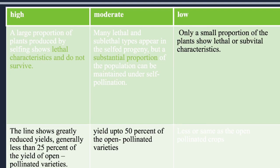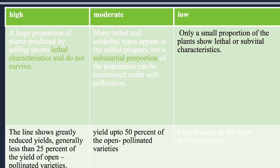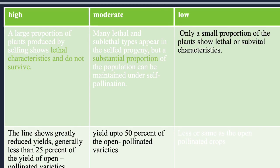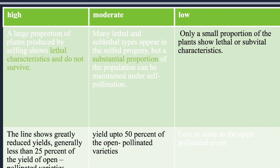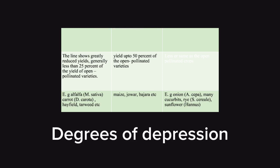The degree of inbreeding depression also determines the yield capacity of the plant. When the degree is very high, the percentage of yield is less than 25%. In moderate inbreeding depression, the yield is less than 50%. In low inbreeding depression, there is almost no variation — it is similar to open-pollinated varieties. Examples of plants with high depression include alfalfa, carrot, and hayfield tarweed. Moderate depression is seen in maize, jowar, and bajra. Low depression is seen in onion, cucumber, rye, and sunflower (Helianthus annuus).